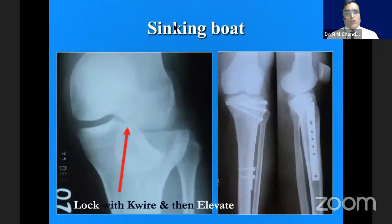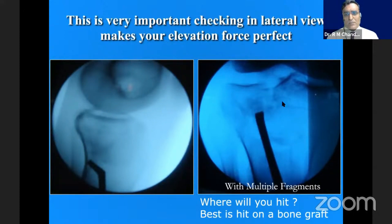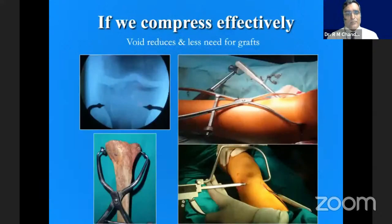This is a sinking boat pattern — if you just punch, it tries to jump up into the joint. So we lock it with a K-wire and then elevate with a punch appropriately. With multiple fragments, you have to judge by the densities. In this situation, a submeniscal arthrotomy is often best — if there are multiple fragments, we can align them better.